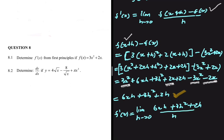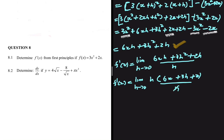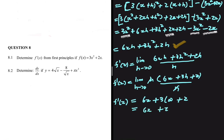We take h as a common factor on the numerator, giving f prime of x equals the limit as h tends to 0 of h times 6x plus 3h plus 2, all divided by h. The h's cancel, and letting h tend to 0, we get f prime of x equals 6x plus 3 times 0 plus 2, which is 6x plus 2. This is exactly what we were expecting.